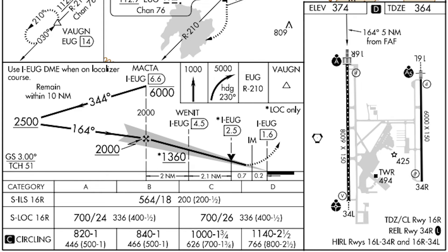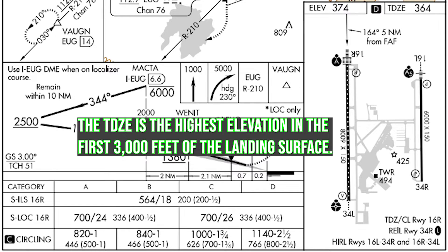Knowing where to look on the chart, that's an easy question. But let's also take a look at what TDZE is. By definition, it is the highest elevation in the first 3,000 feet of the landing surface — so that would be this distance here on this runway.